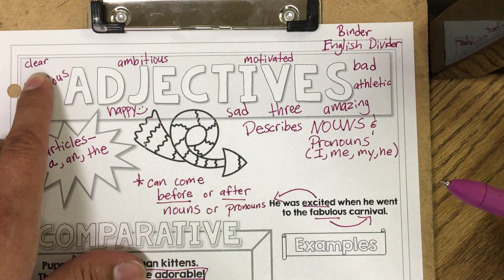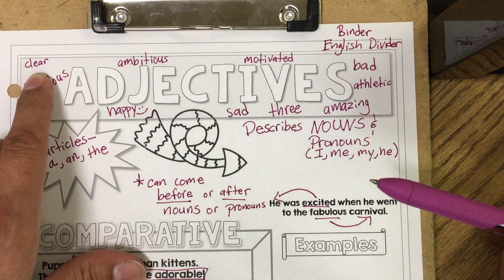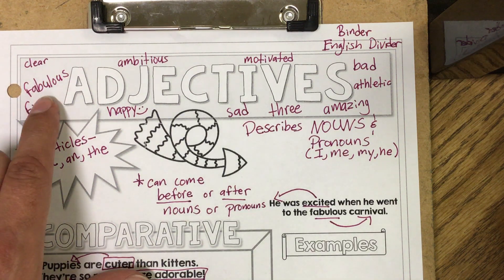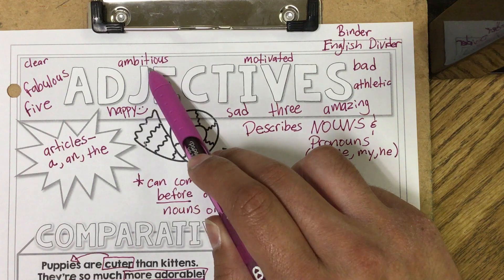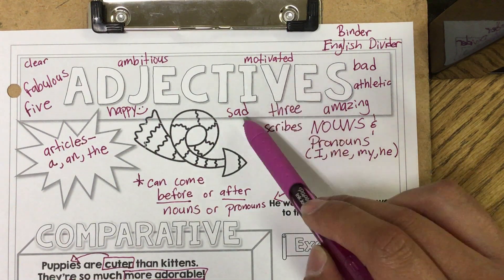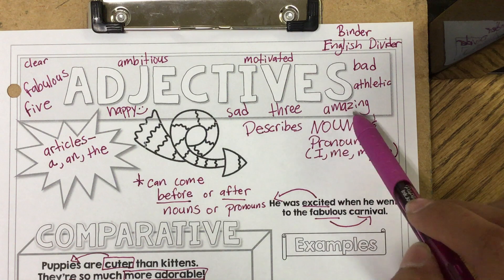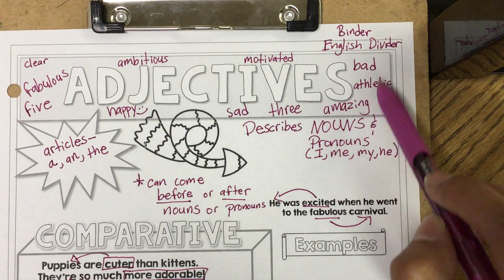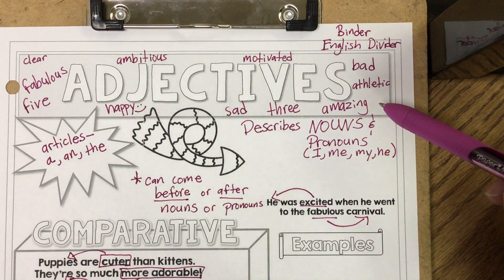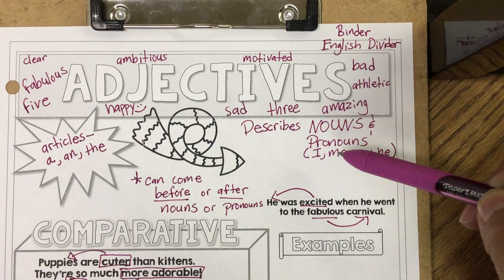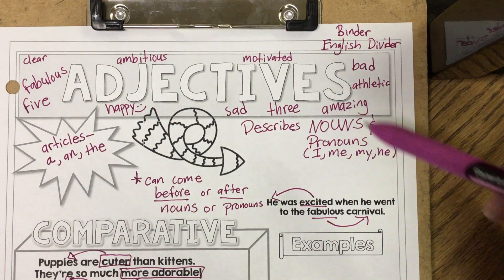Remember, adjective words describe nouns — they're descriptive words. In the title, write the following adjective word examples: clear, fabulous, five, ambitious, happy, motivated, sad, three, amazing, athletic, and bad. Please write all of these adjectives — whatever is on my paper should be on your paper, so you're copying your notes. Pause the video if you need to catch up.